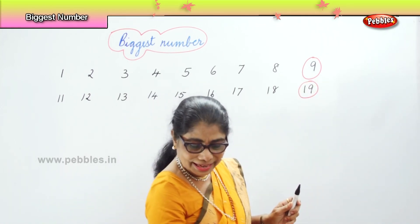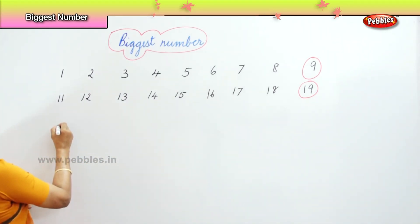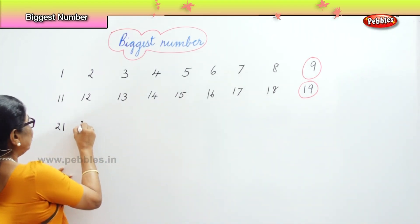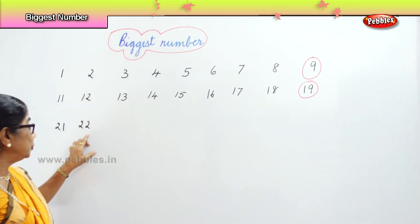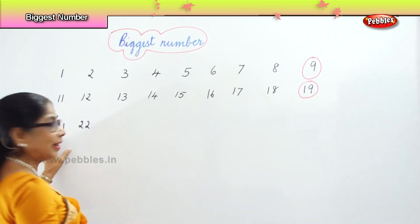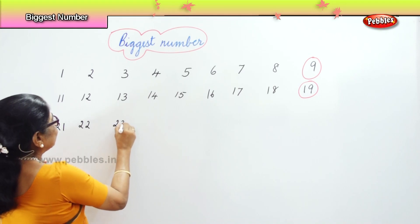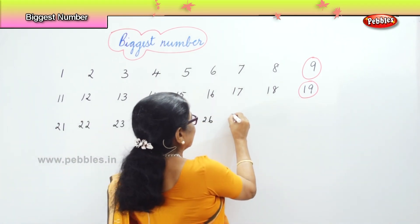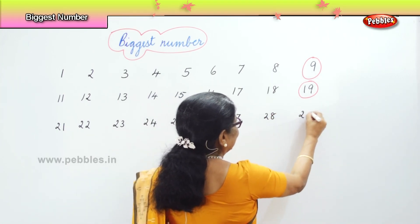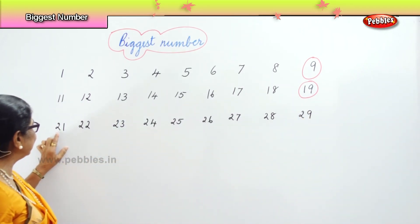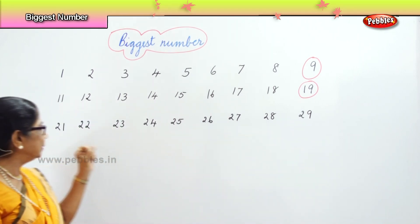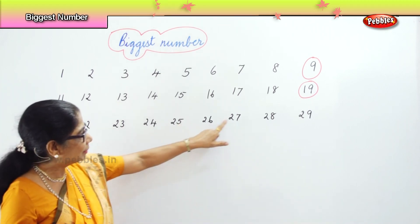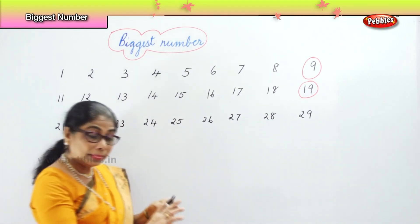Now let's look at two and one — twenty-one. The first number is going to be two for all. Two and two, two and three, and it goes on. Twenty-one, twenty-two, twenty-three, twenty-four, twenty-five, twenty-six, twenty-seven, twenty-eight, twenty-nine. All are in the twenties. Which is the biggest here? Definitely twenty-nine.